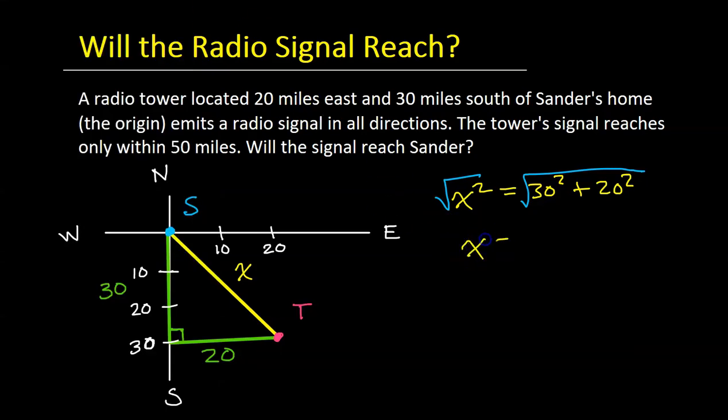So x is approximately 36.1. Since this distance is less than 50, then that means Sanders is well within the signal radius. So yes, the signal will reach Sanders.